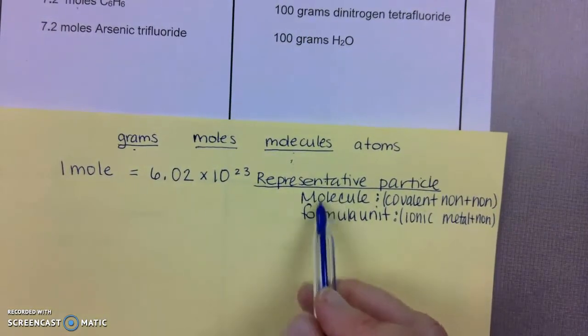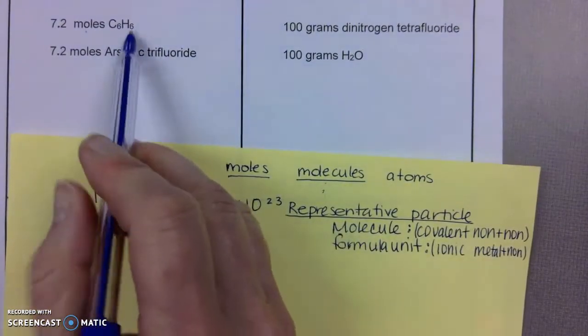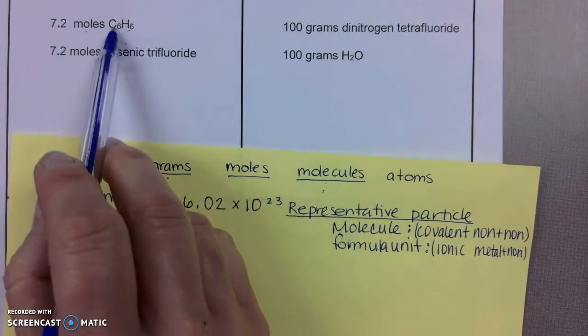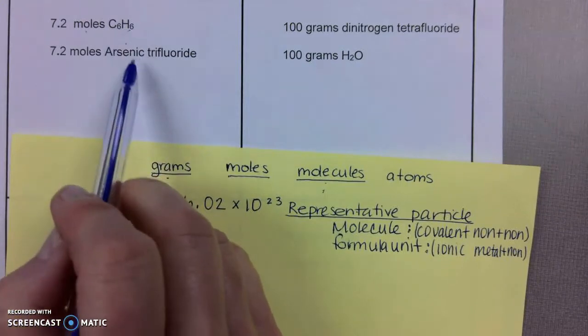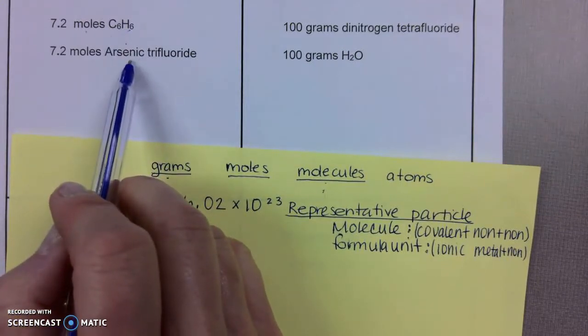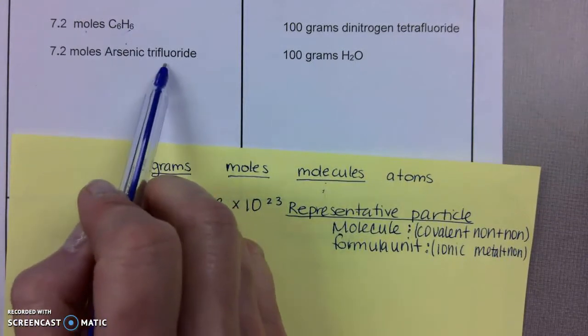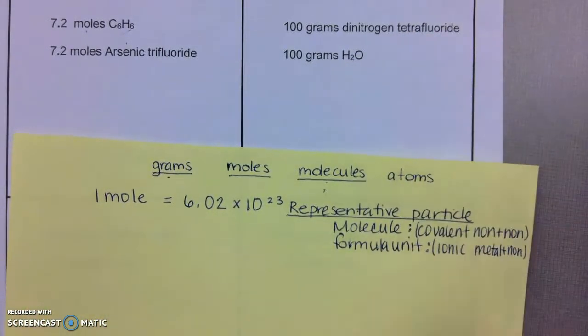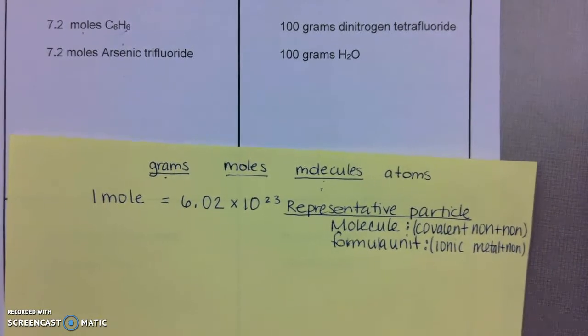Representative particle can be either one. It's looking at what the molecule or an ionic compound is. In this case, it starts with a non-metal, so this is a molecule. Arsenic is also a non-metal with trifluoride, and these two are also non-metals. So then these would be called molecules.